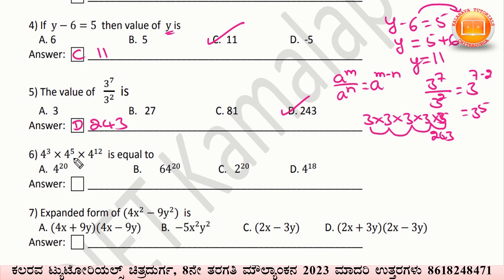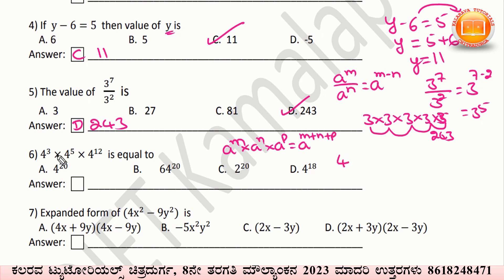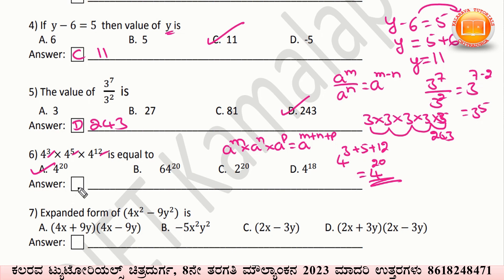Here, 4 to the power 3 into 4 to the power 5 into 4 to the power 12. The law of indices says aᵐ into aⁿ into aᵖ equals a to the power m plus n plus p. So we apply the same formula: 4 to the power of 3 plus 5 plus 12. That gives 4 to the power of 20. Option A — 4²⁰ — is the correct answer.